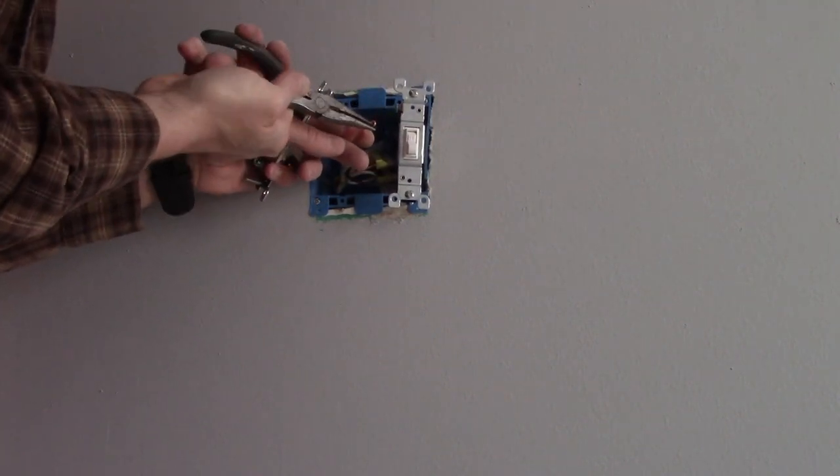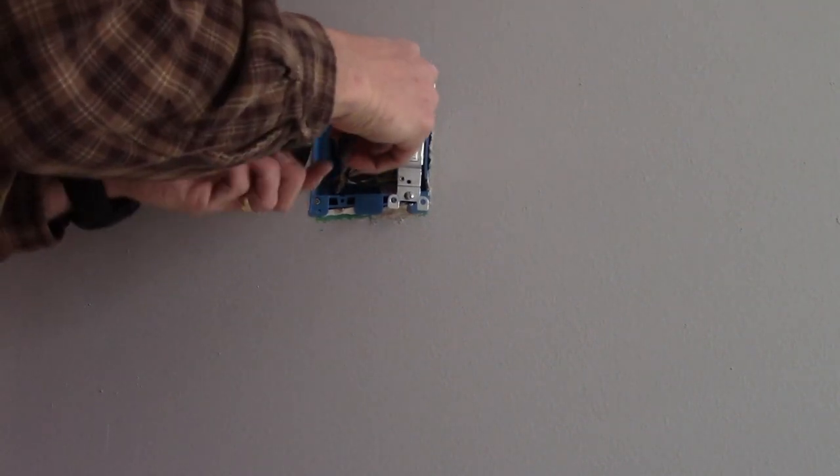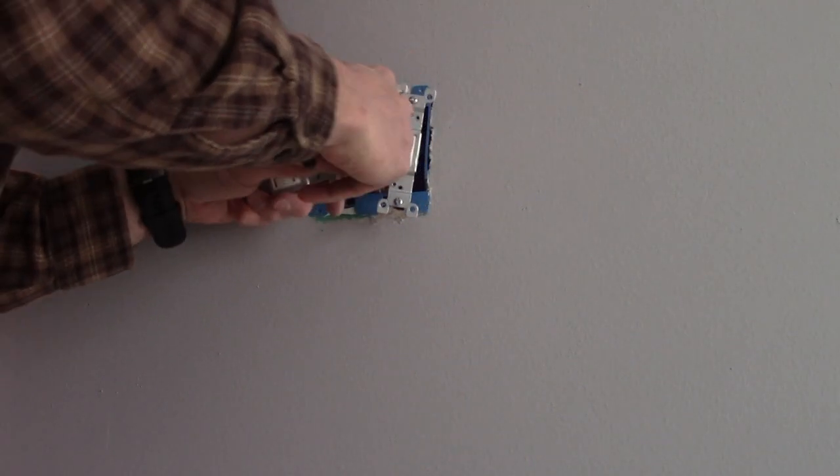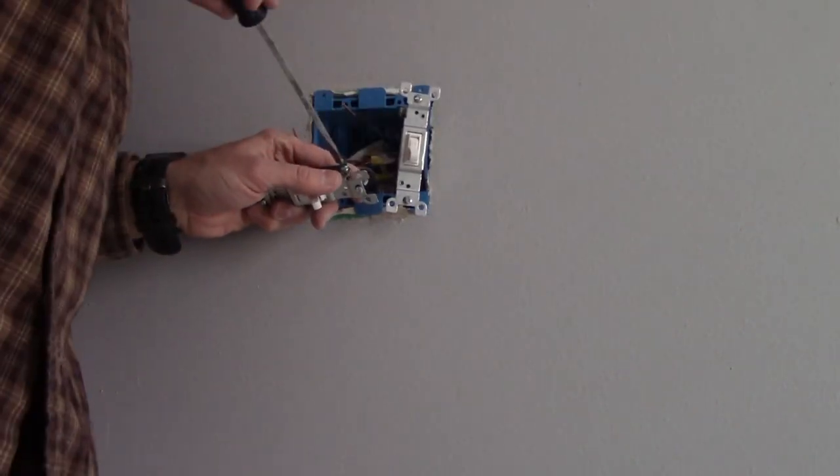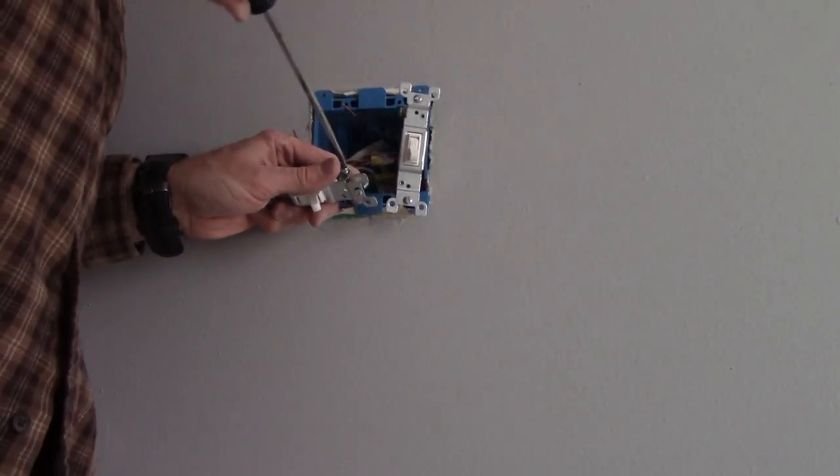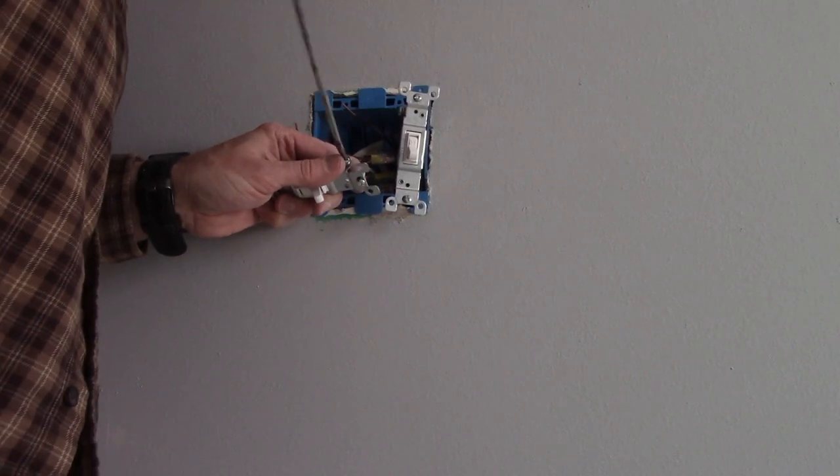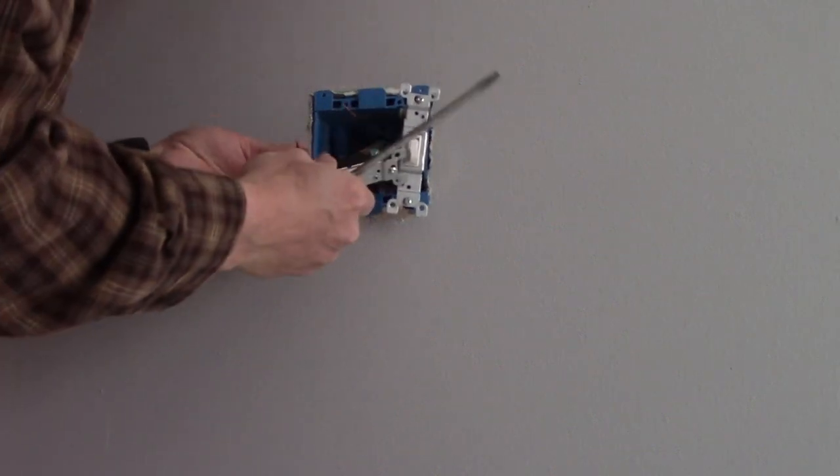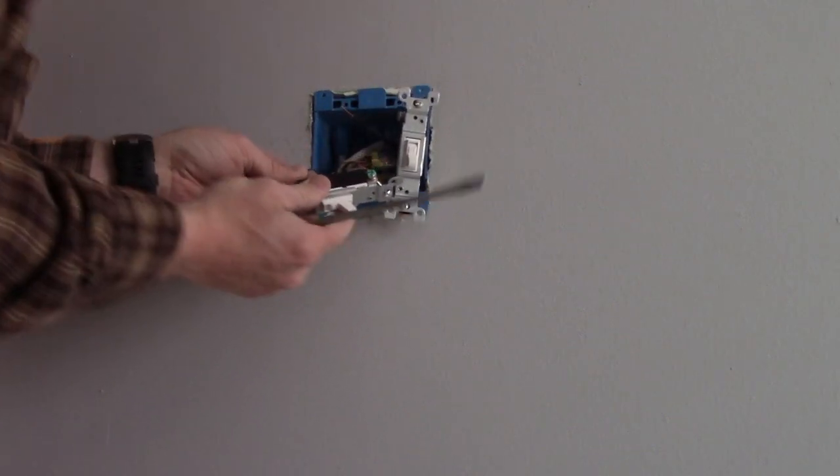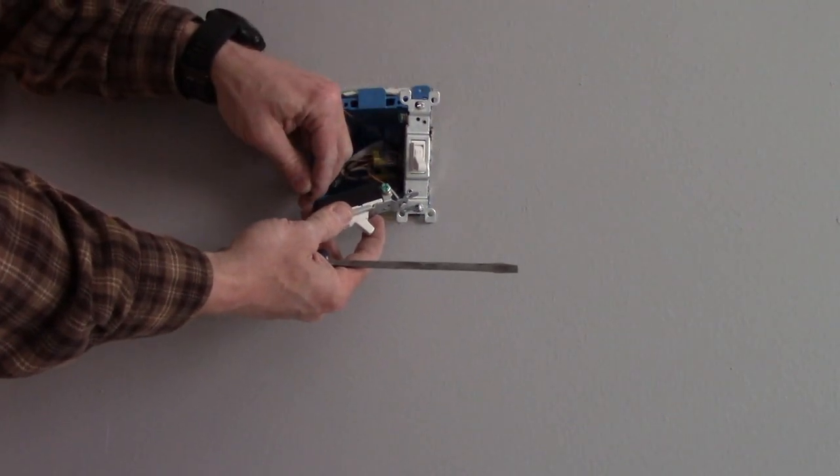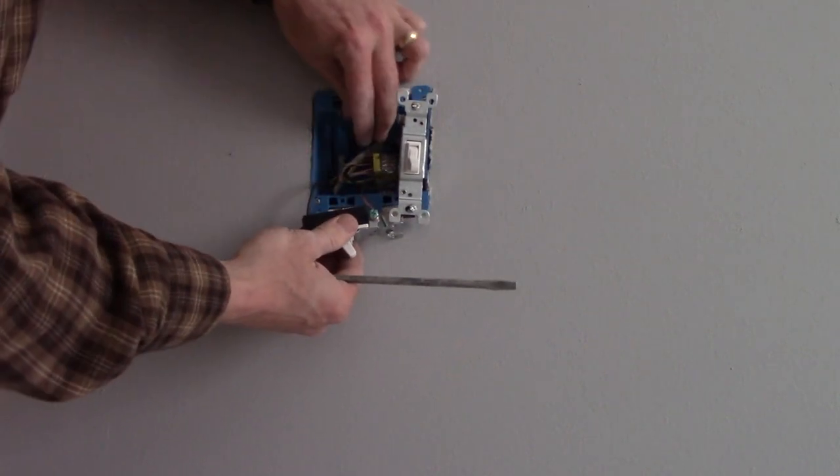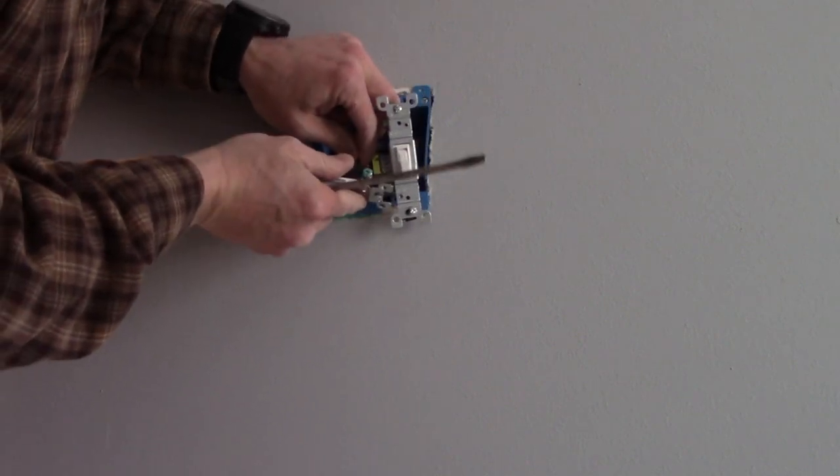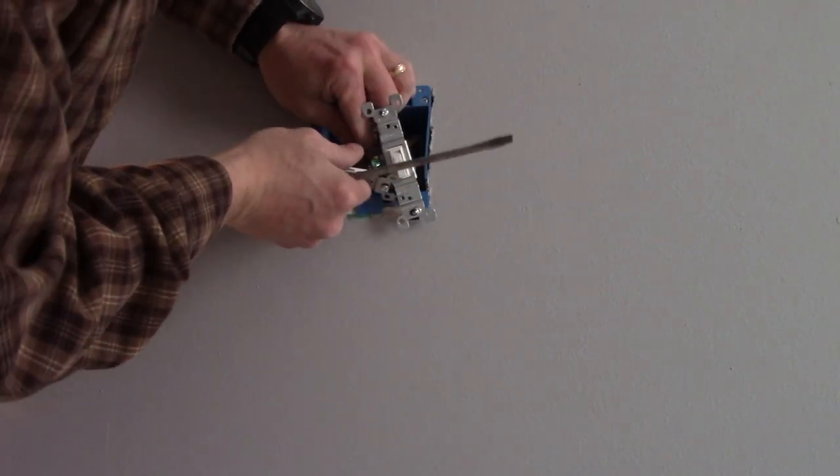So again, we're going to make our ground connection first. Take our output. Push it into the back. And if you're confused at how long to strip the wire, there's actually a chart on the back that shows you how long.